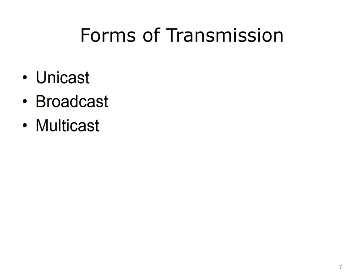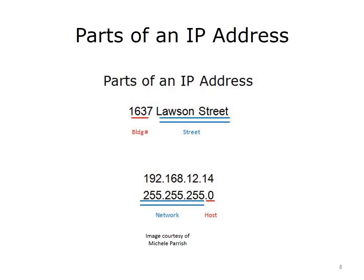Addresses that have 127 in the first octet are reserved for testing and cannot be assigned to devices. In particular, 127.0.0.1 is reserved for the loopback test, which allows a user to test the TCP/IP settings on a device. Private addresses can be used in home, office, or LANs where packets do not have to be sent across the Internet. The Internet uses public addresses. If a private network needs to connect to the Internet, it must use either network address translation, NAT, or a proxy server.